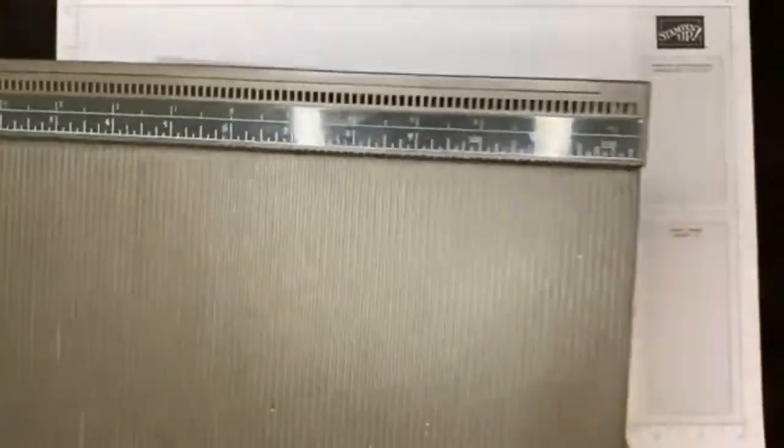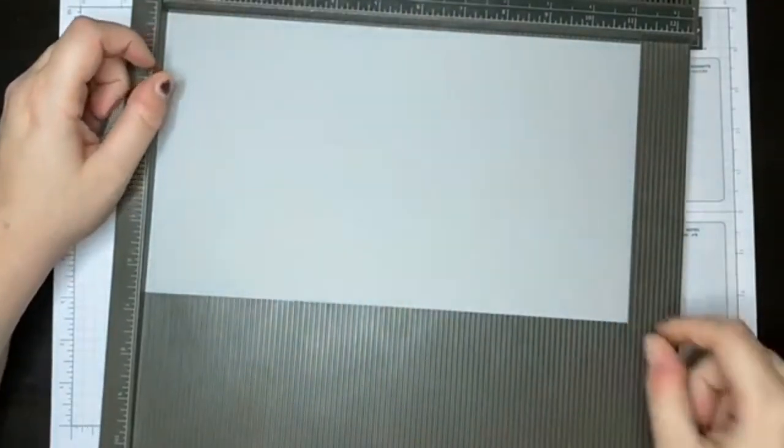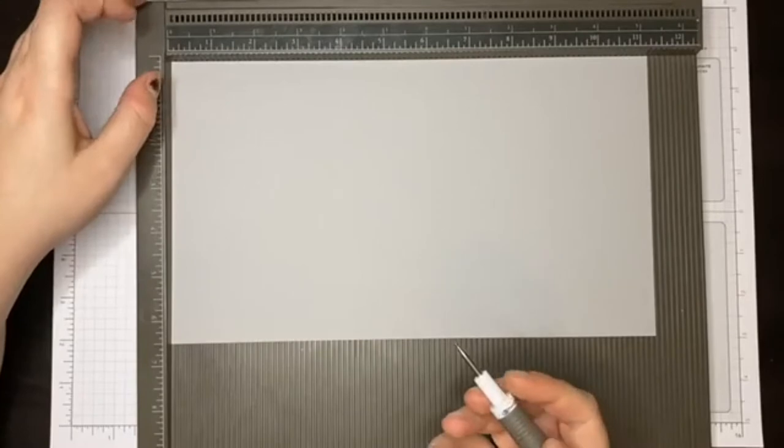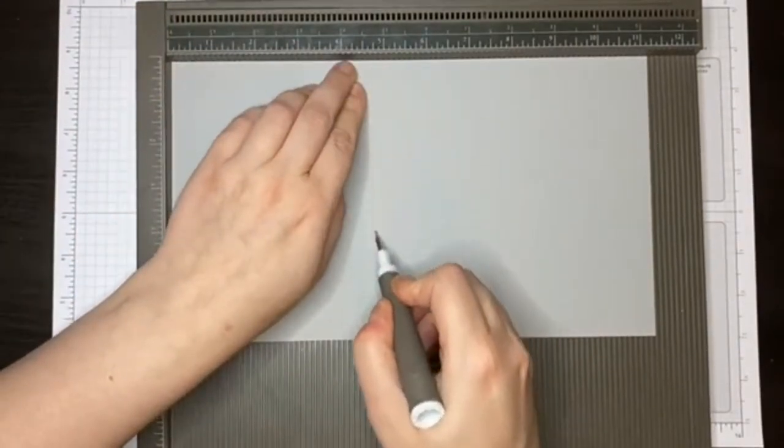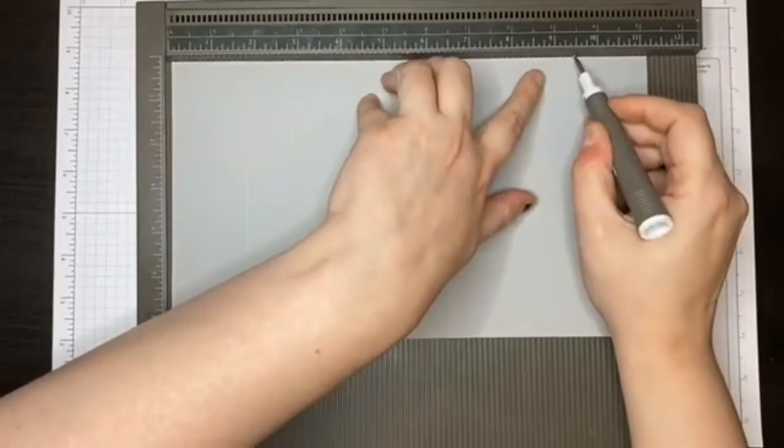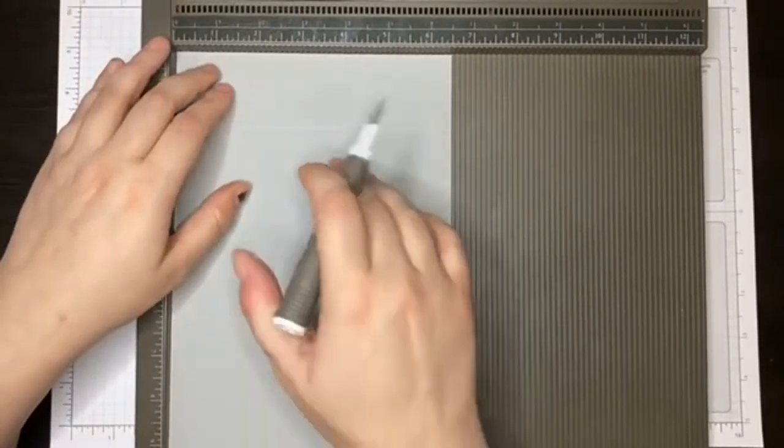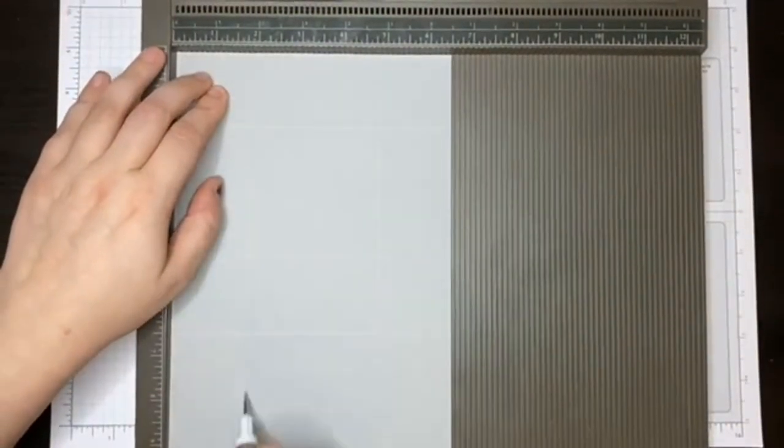Let me grab my scoreboard and scoring tool. Scoring on the long side, you want to start at one and three quarters, four and three quarters, six and a half, and nine and a half. Then turn it to the short side and score at one and three quarters, rotate 180 degrees, and one and three quarters again. That's all the scoring we need.